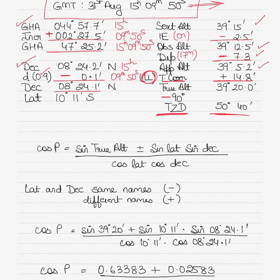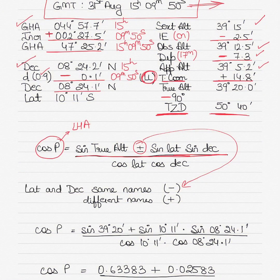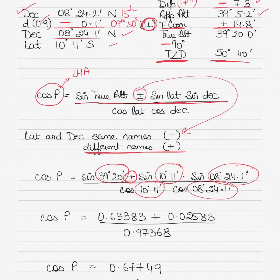We now find the LHA value using cos P. P stands for LHA or local hour angle. The formula is: cos P equals (sin true altitude plus or minus sin latitude times sin declination) divided by (cos latitude times cos declination). The plus or minus depends on whether latitude and declination are same or different names. If same names (both north or both south), use minus; if different names, use plus. In this case, latitude is south and declination is north — different names — so we use plus.